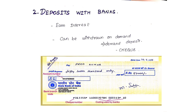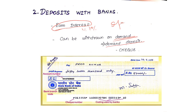Money has another major form beyond currency. If you have money — coins or notes — you can deposit it in a bank. The money deposited in banks is a major form of money, called demand deposits. If we make a deposit in the bank, we can earn interest on it.